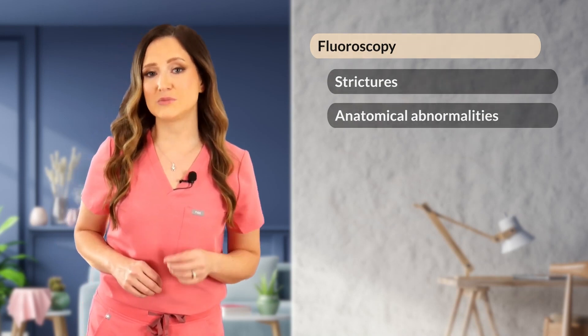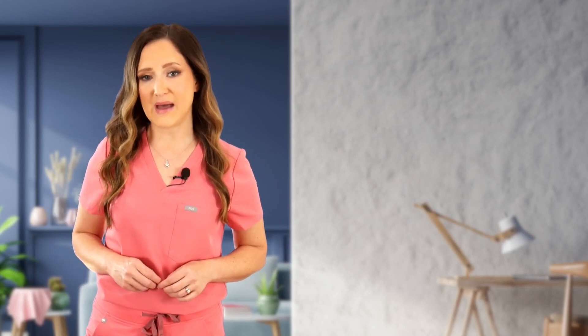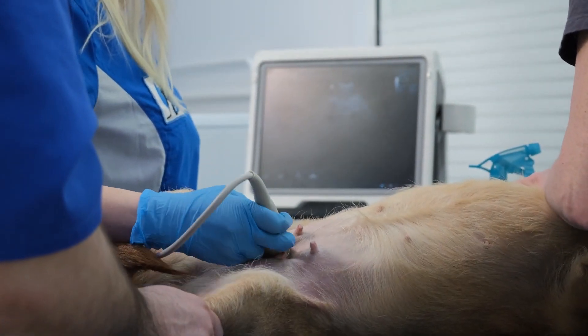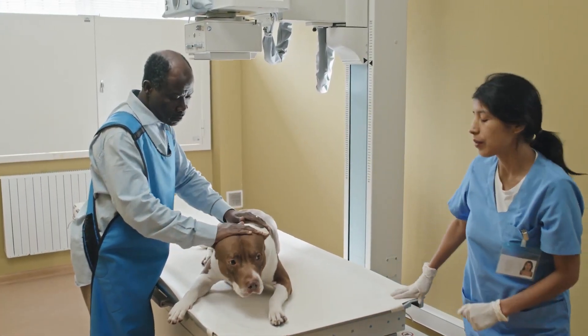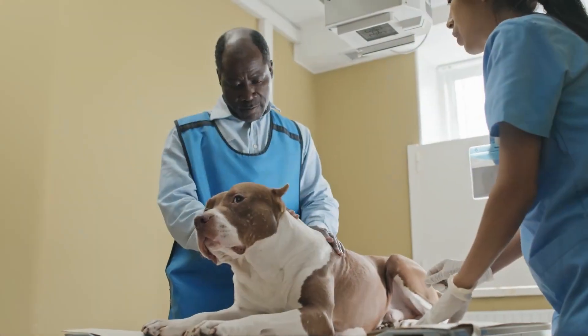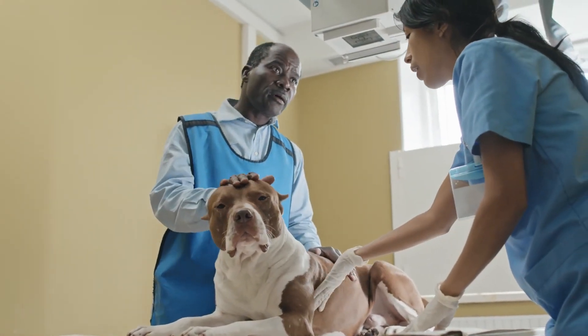For vomiting, abdominal radiographs plus or minus an abdominal ultrasound are vitally important to rule out gastrointestinal obstruction, space-occupying abdominal masses, pancreatitis, ureteral obstruction or renal dysplasia leading to uremic gastritis, and gastric and intestinal wall thickness and layering abnormalities. Thoracic radiographs should also be considered. In addition to diagnostic imaging, complete blood work and urinalysis are strongly recommended in the vomiting patient.